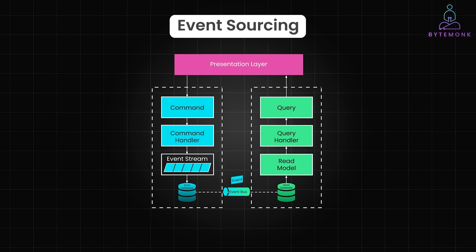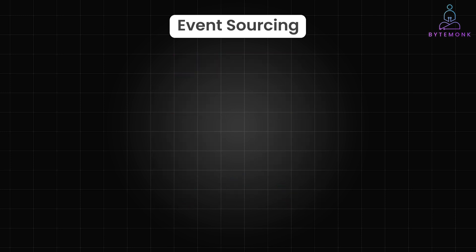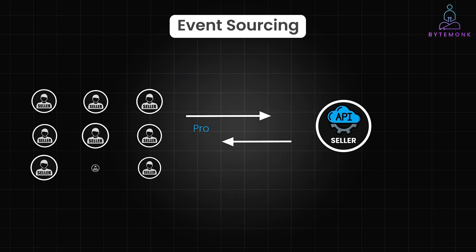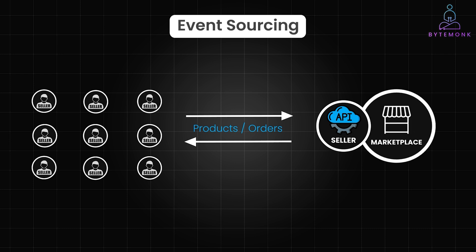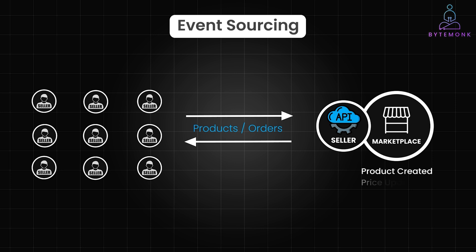Imagine an API for sellers managing products on an e-commerce site. In a CRUD application, product changes are directly updated in the database. But with event sourcing, every action like product created or price updated generates an event logged with details like authors and timestamps, and this ensures you never lose historical data.